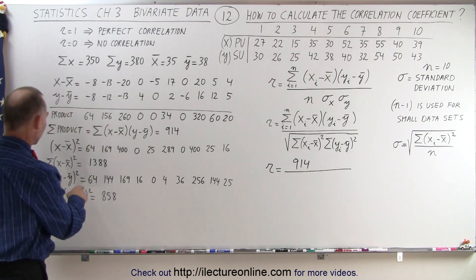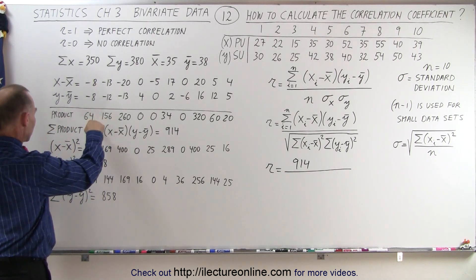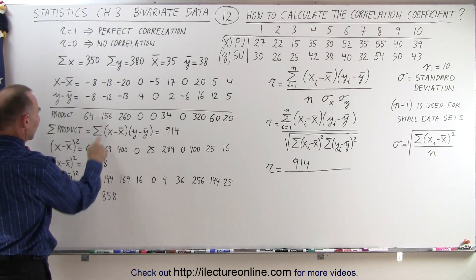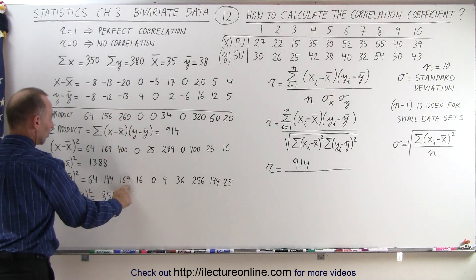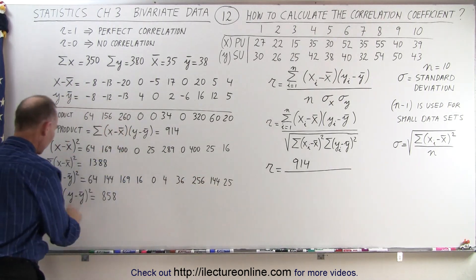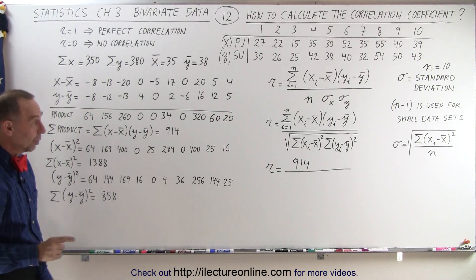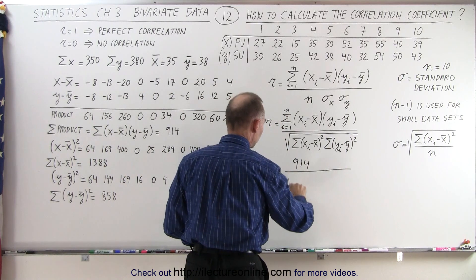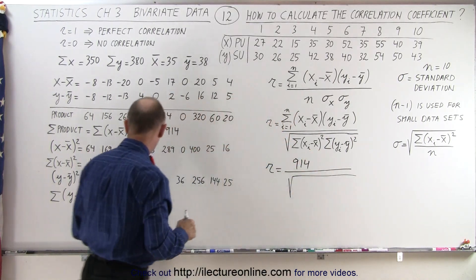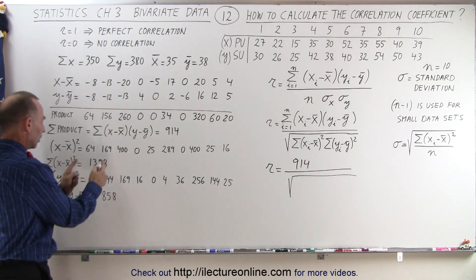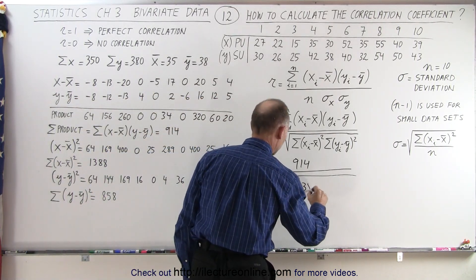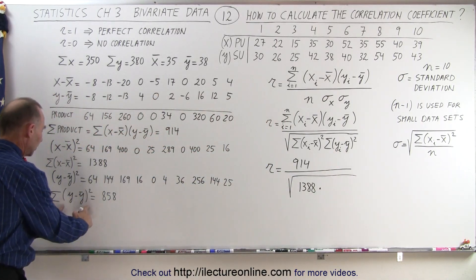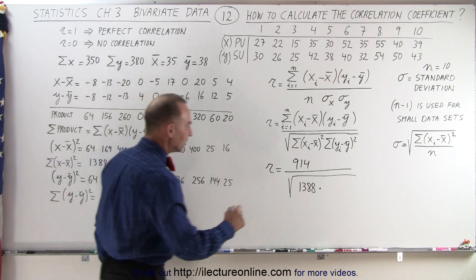We do the same for the y values: take the difference between each y value and the average of y, square it. −8 squared is 64, 12 squared is 144, 13 squared is 169, and so forth. When we sum all of those up, we get 858. Now we multiply those two numbers together — 1388 times 858 — and take the square root to get the denominator.